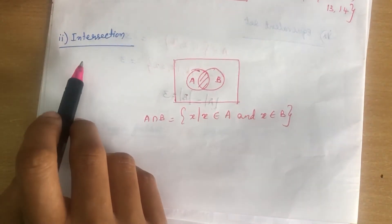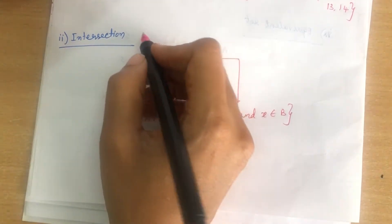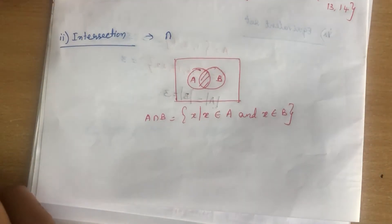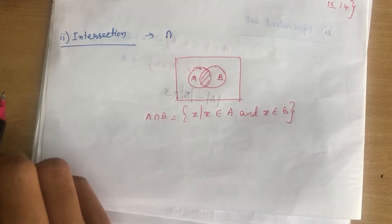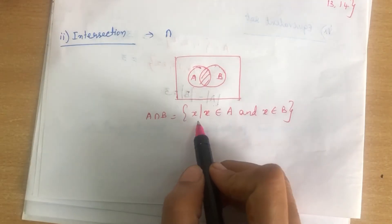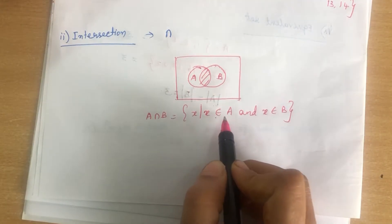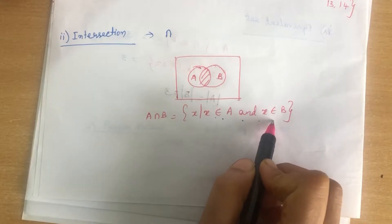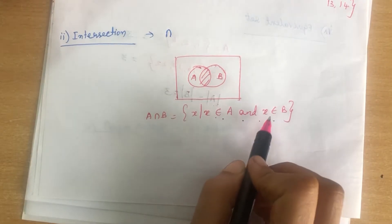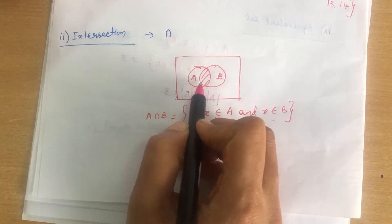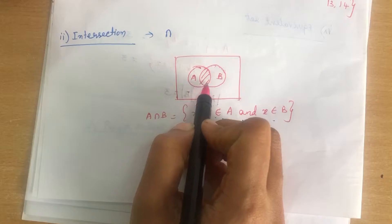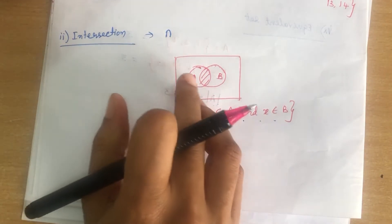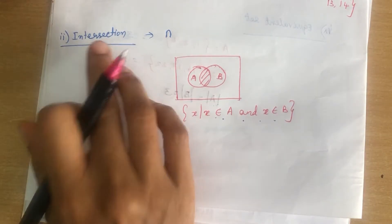Next is intersection. Intersection is denoted by the ∩ symbol. It is a set of elements which are in both A and B — {x | x ∈ A and x ∈ B}. Those elements which are in both A and B are called the intersection set. We can draw a Venn diagram to represent this.